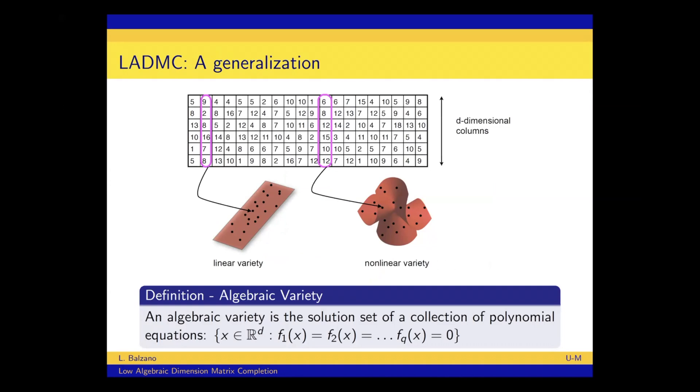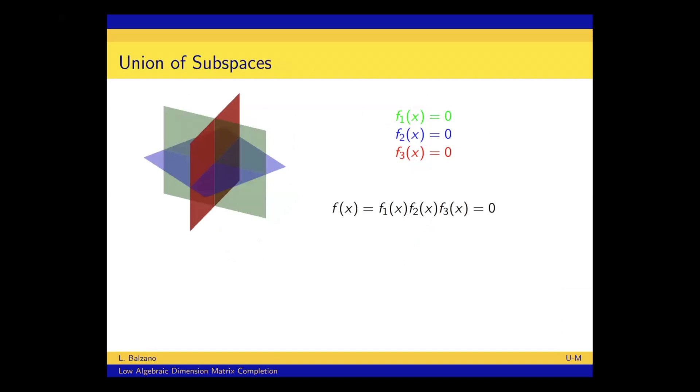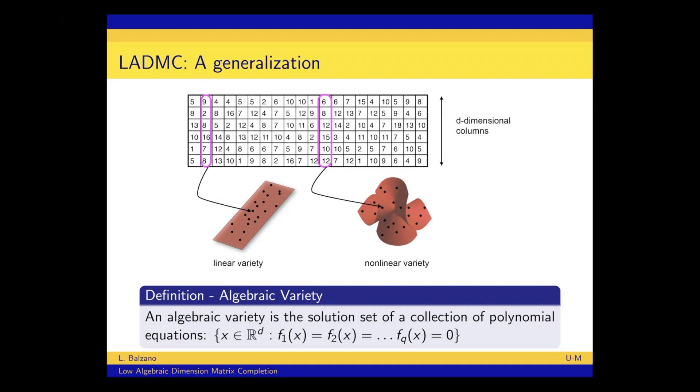So I want to first define an algebraic variety for those of you who this isn't a familiar concept. So an algebraic variety is the solution set of a collection of polynomial equations. And usually we think of those equations as being some polynomial in the entries of x. So if x is a d dimensional vector, we have d variables in that vector and it's a polynomial in those variables. And there's usually no constant term, we just say all of these polynomials are equal to zero. So any x that satisfies all of these simultaneously will be part of the set which is called the algebraic variety defined by these polynomial equations.